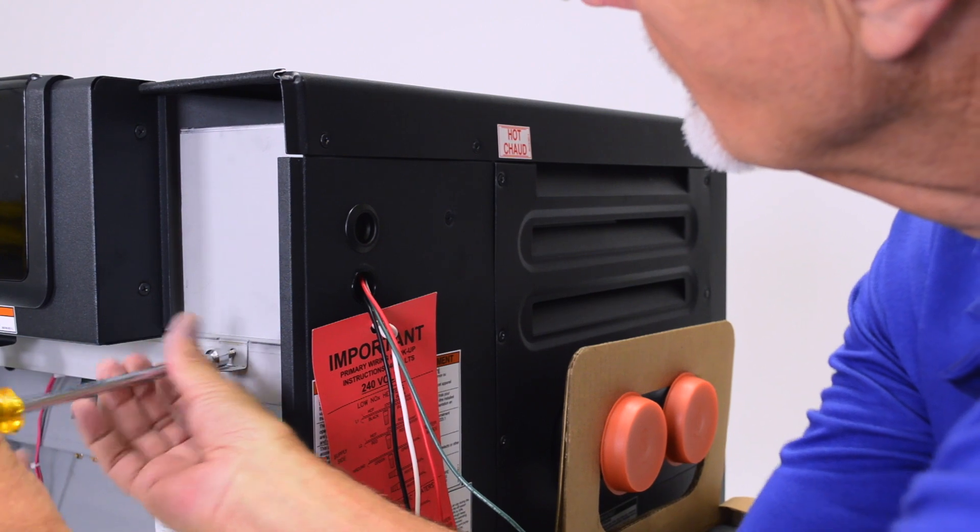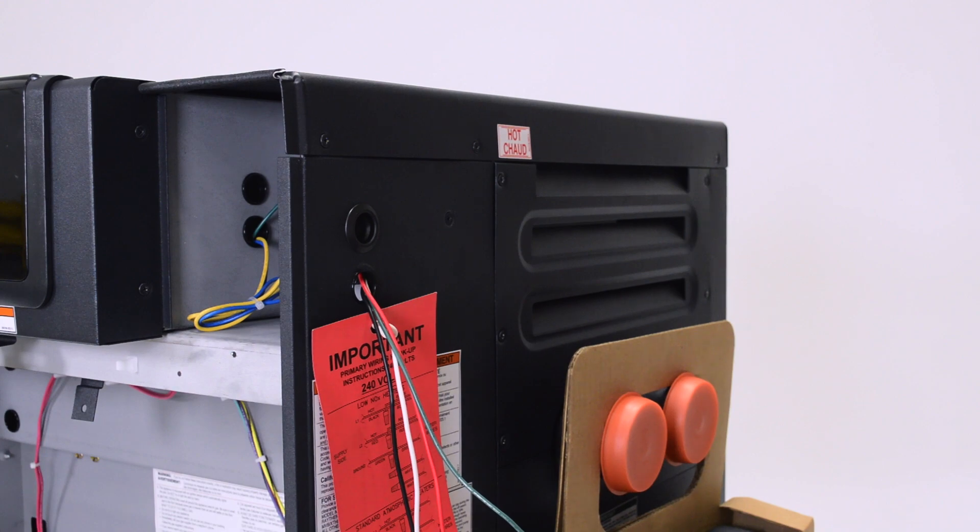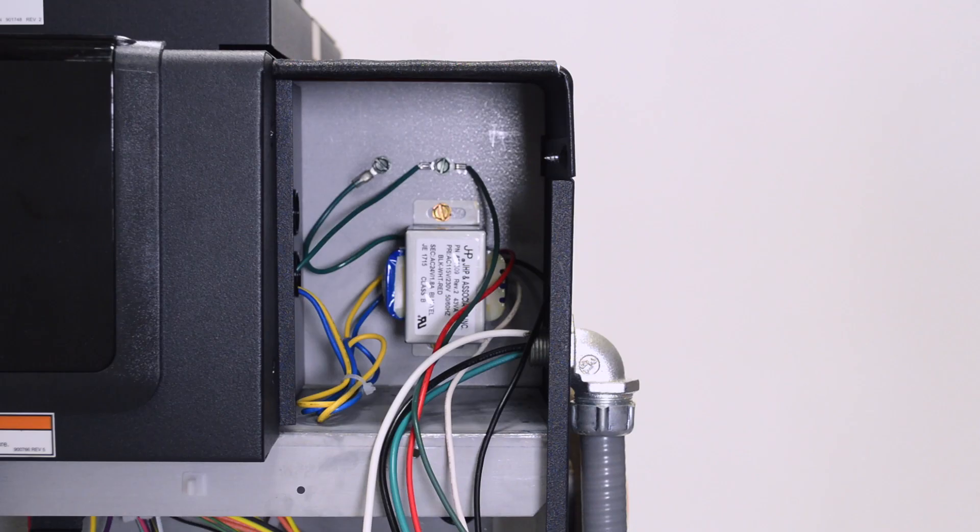Using a 5-16 inch nut driver, remove the transformer cover located on the right side of the heater. The transformer is attached to the back wall of the junction box.